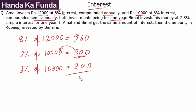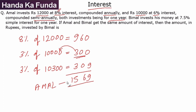The total amount of interest he gets is the sum of these values — 960, 300, and 309 — so the total interest that Amal gets in the one year period is 1,569. Now, Bimal invests his money at 7.5% simple interest for one year, and Amal and Bimal get the same amount of interest.